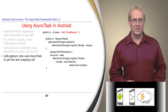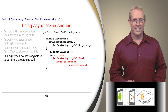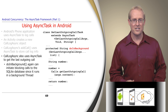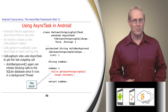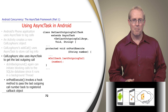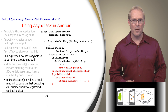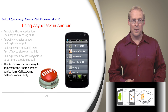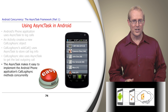CallLogAsync also uses an async task to get the last outgoing call concurrently by creating and executing an anonymous instance of GetLastOutgoingCallTask. The doInBackground method runs in a background thread and invokes a blocking operation to the underlying content provider and SQLite database to retrieve the last outgoing call. Its onPostExecute method passes the last outgoing call number to the lastOutgoingCall hook method, which was registered as a callback object by the activity earlier. This example shows how Android's async task framework makes it straightforward to execute operations concurrently in background threads and process the results in the user interface thread.